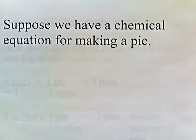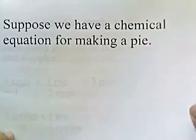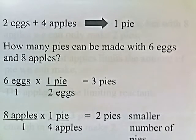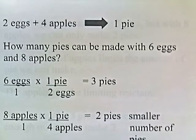Suppose we have a chemical equation for making a pie. Our chemical equation is two eggs plus four apples make one pie. How many pies can be made with six eggs and eight apples?